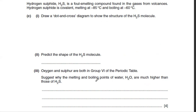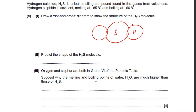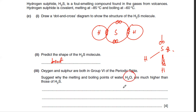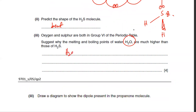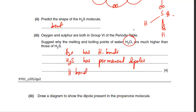Draw the dot-and-cross diagram of H2S: sulfur has six electrons in group six, bonded to two hydrogens, with two lone pairs remaining. The shape is derived from tetrahedral — two lone pairs and two bonds — so the shape is bent/V-shaped/non-linear. H2O has much higher melting and boiling points than H2S because H2O has hydrogen bonds while H2S only has permanent dipoles, and hydrogen bonds are stronger than permanent dipoles.